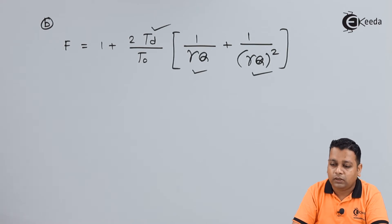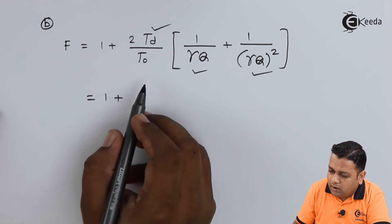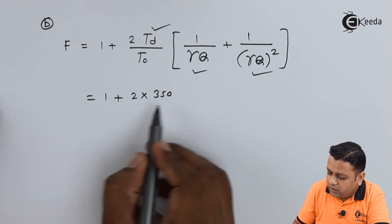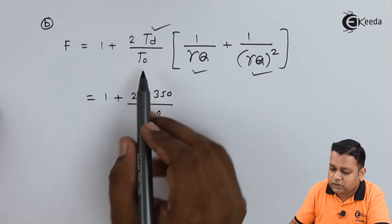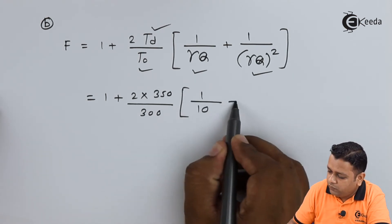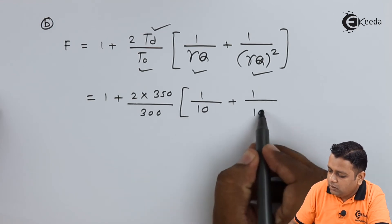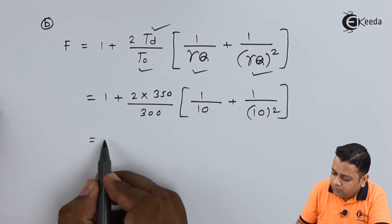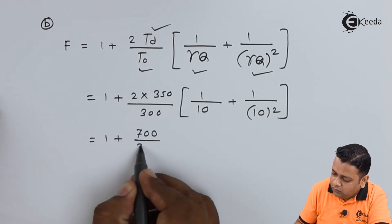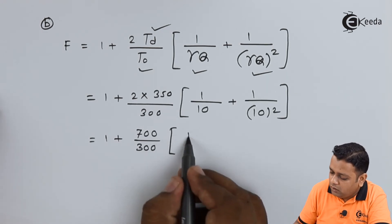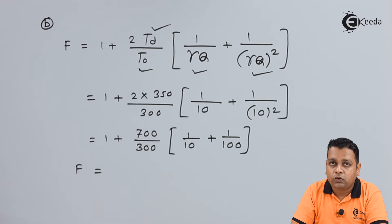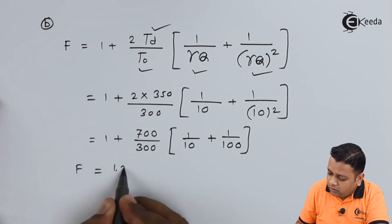Therefore, F = 1 + 2 × (350/300) × [1/10 + 1/10²]. Simplifying: 2 × 350 = 700, divided by 300, multiplied by the bracket containing 1/10 plus 1/100. Therefore the value of F is obtained to be 1.26.